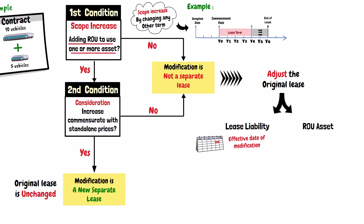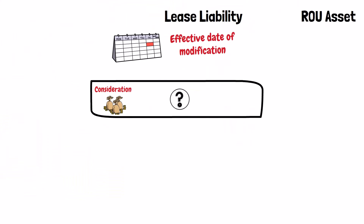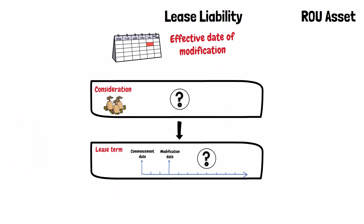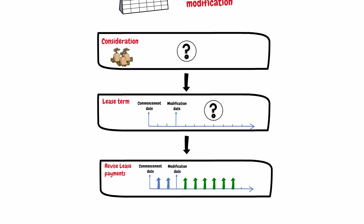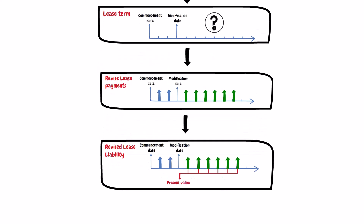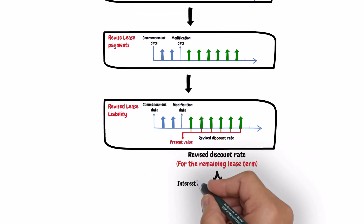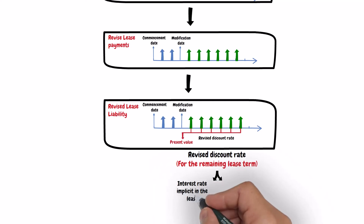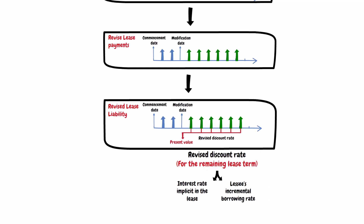To recalculate the lease liability, you should do the following: determine the consideration and the lease term of the modified lease contract, then revise the lease payments, then recalculate the lease liability by discounting the revised lease payments to the modification date using the revised discount rate. This revised rate is determined as the interest rate implicit in the lease for the remainder of the lease term, if that rate can be readily determined, or the lessee's incremental borrowing rate at the effective date of modification if the implicit rate cannot be readily determined.